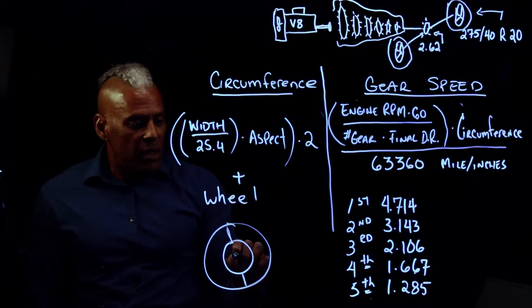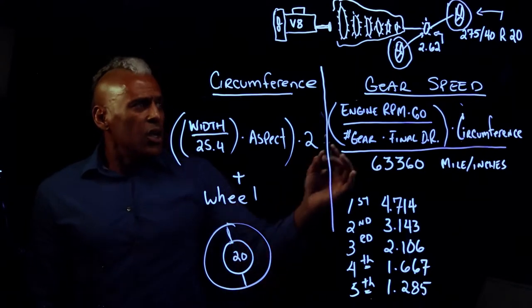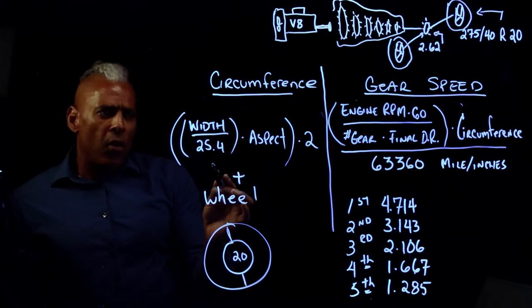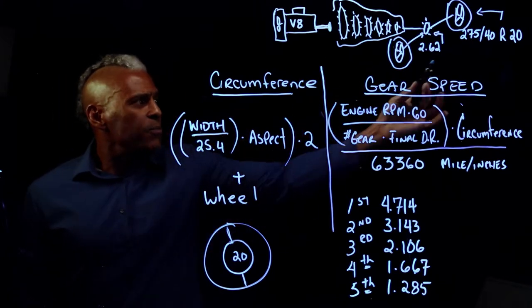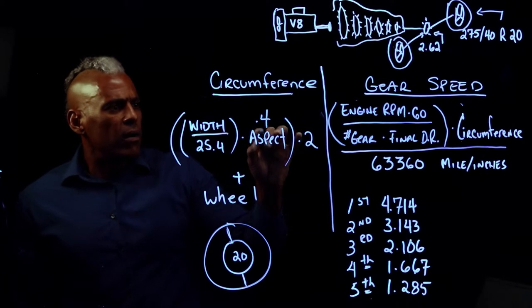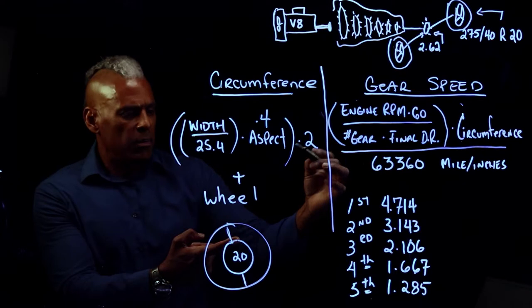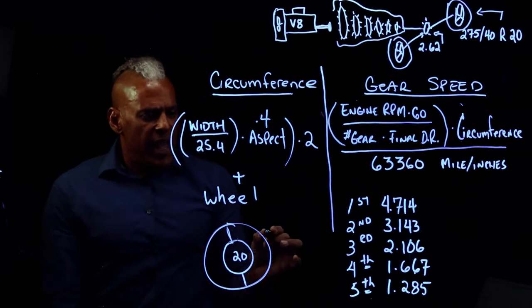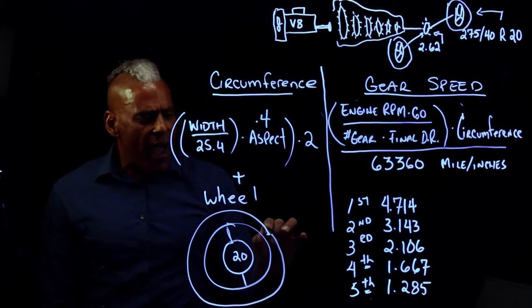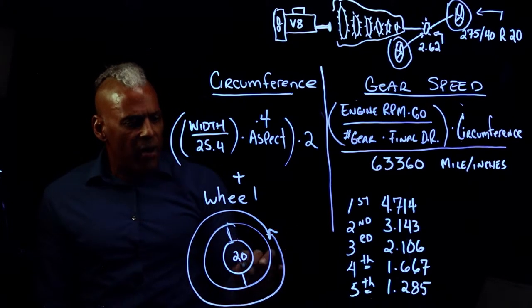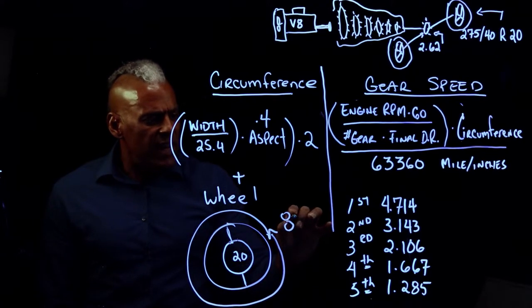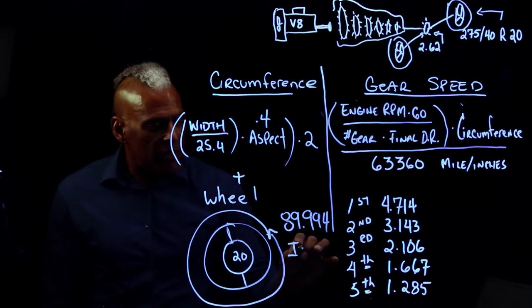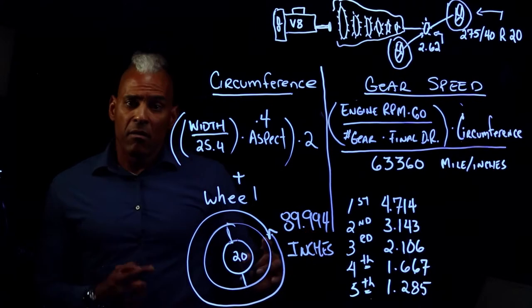And then plus the wheel size in the middle. In this particular case it's 20. So when you plug in the numbers: 275 divided by 25.4, multiplied by the aspect ratio which in this particular case is 0.4, that gives us this calculation here, multiplied by 2, add in the rim size 20, and that gives us our overall circumference around this tire wheel size. In this particular case it's 89.994 inches.